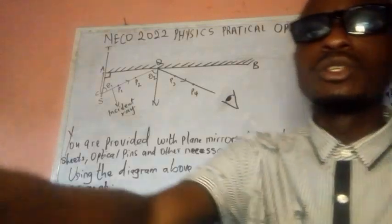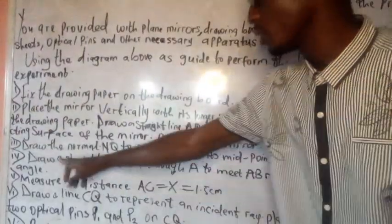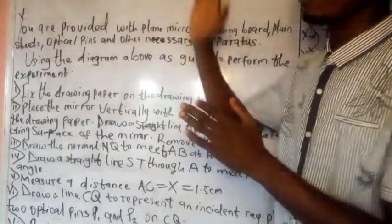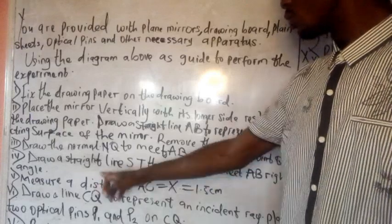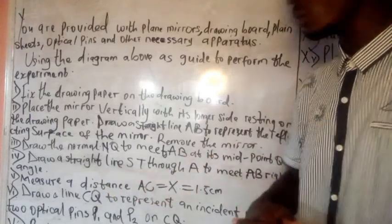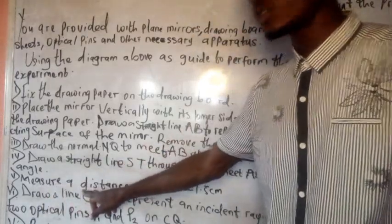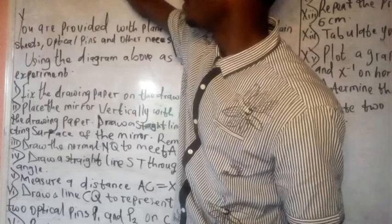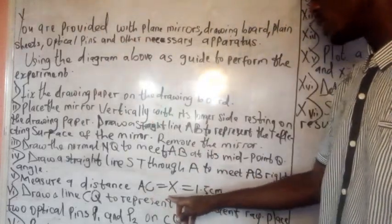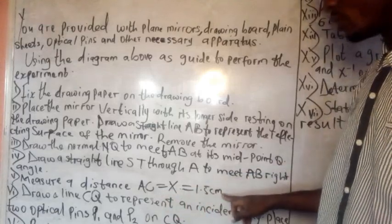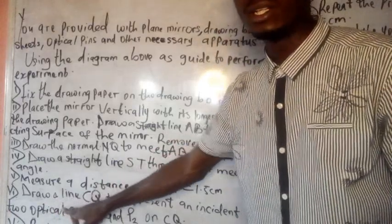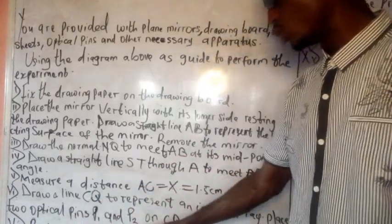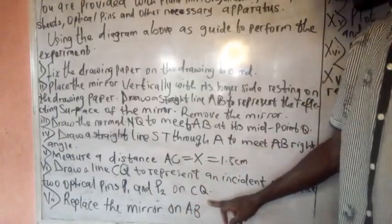For step three, draw the normal MQ to meet AB at the midpoint, dividing AB into two equal parts. Also measure distance AC, which equals x, and for the first reading x equals 1.5 cm. Then draw a line CQ to represent the incident ray and place two optical pins P1 and P2 on CQ.